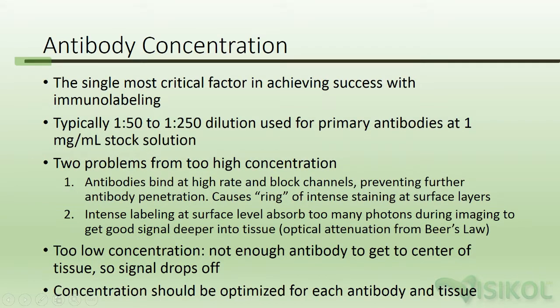Antibody concentration. The most critical factor for achieving success with immunolabeling is the antibody concentration. Typically, good results are obtained using a 1:50 to 1:250 dilution for primary antibodies that come in a 1 mg/ml stock solution. There are two problems caused from using too high a concentration: the antibodies bind at a high rate, blocking channels in the outer layers of tissue, which prevents further antibody penetration. This causes a ring of intense staining at surface layers.